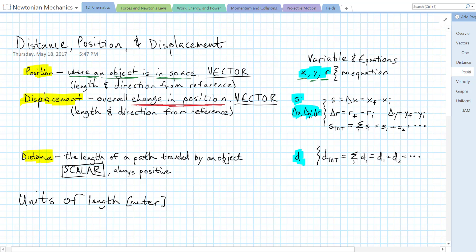That comes from the fact that if s is displacement, and displacement is change in position, delta of a variable just means change in that variable. So displacement is change in position, or change in x. That change is always the final value minus the initial value. So displacement is final position minus initial position, and it is a vector quantity.